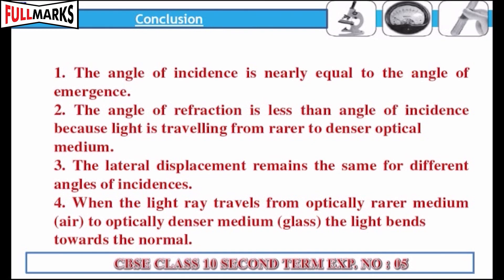When the light ray travels from optically rarer medium to optically denser medium, the light bends towards the normal.